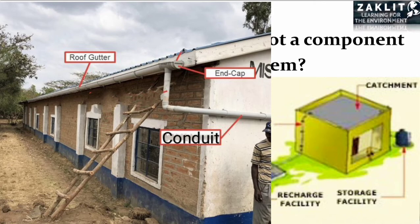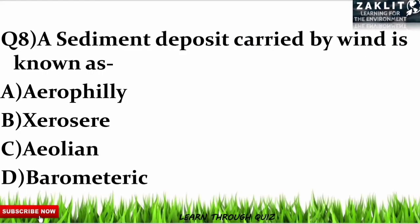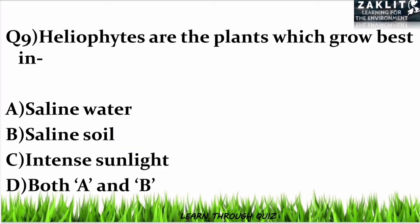The eighth question was: a sediment deposit carried by wind is known as what? The correct option is C — aeolian.